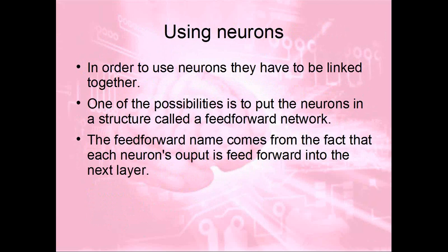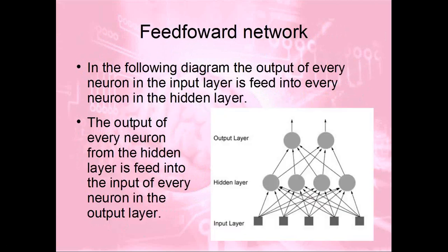In order to use neurons, we put them together in a network — they need to be linked together. The most common, and the one we'll use in our example, is feed-forward. It comes from the fact that each neuron's output is fed into the next layer. On the left you have five input neurons fed into four neurons in the hidden layer, so every output of every input neuron goes to every input of the hidden layer. The same is true going from the hidden layer to the output layer.